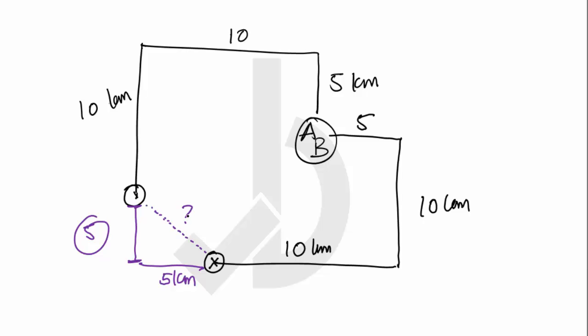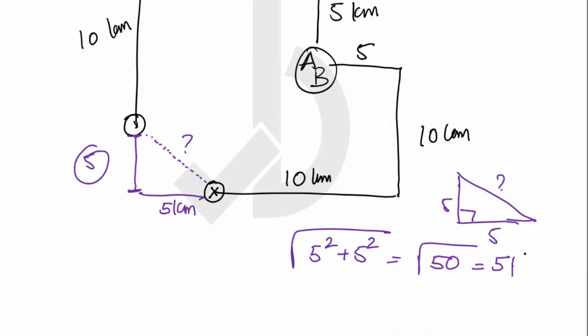We can use the Pythagorean theorem where this is 5 and this is 5. The root of 5 squared plus 5 squared equals root 50, which is 5 root 2. So this is 5 root 2 kilometers.